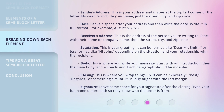Sender's Address: This is your address and it goes at the top left corner of the letter. No need to include your name, just the street, city, and zip code. Date: Leave a space after your address and then write the date. Write it in full format, for example, August 6, 2023. Receiver's Address: This is the address of the person you're writing to. Start with their name or company name, then the street, city, and zip code.